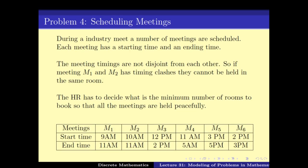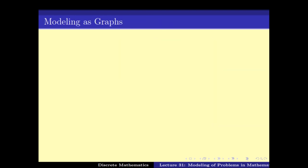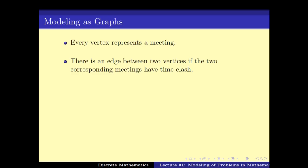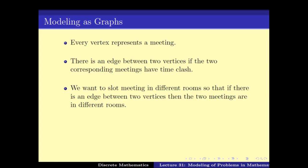Let's move on to the scheduling problem. We have six meetings, and HR needs to find the minimum number of rooms to book such that no two meetings that clash in time are held in the same room. We can use graph theory to model this: represent every meeting as a vertex, and draw an edge between two vertices if they clash in time. We want to assign meetings to different rooms such that no two adjacent vertices share the same room.